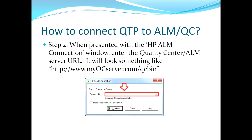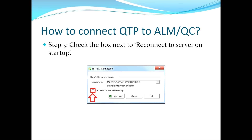Once you've done that, you'll be presented with the HP ALM Connection window. The first input you can enter a value into is the server URL — this is where you would enter the Quality Center server URL that has been provided to you. Once you've done that, your next option is to reconnect to server on startup, which is the checkbox immediately beneath the input. If you check this box, you're telling QTP to automatically connect to this Quality Center server every time QTP loads. This is typically what you would like to have happen. However, in the rare instance that you would not like QTP to automatically connect, you would not check this box.